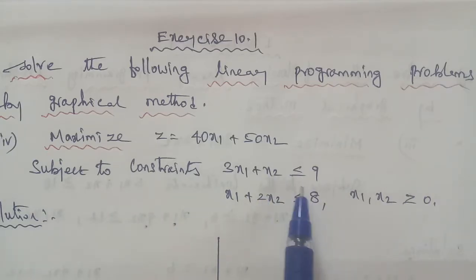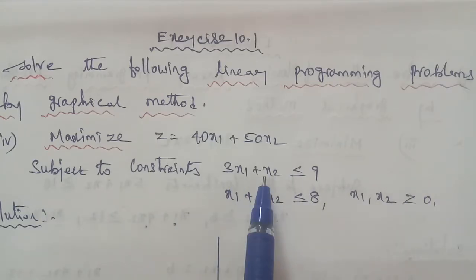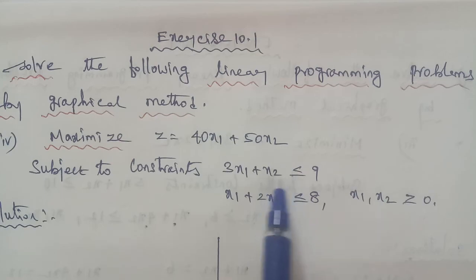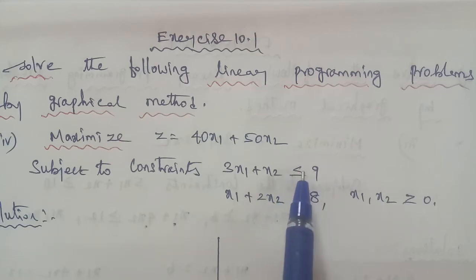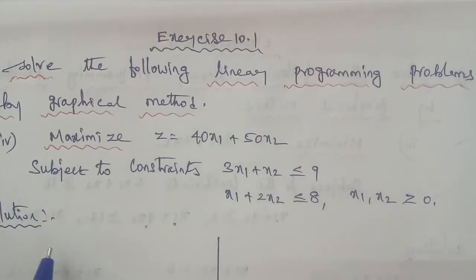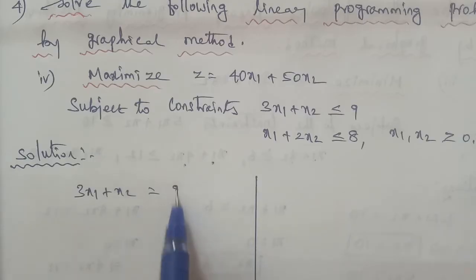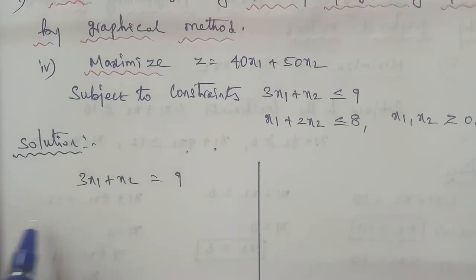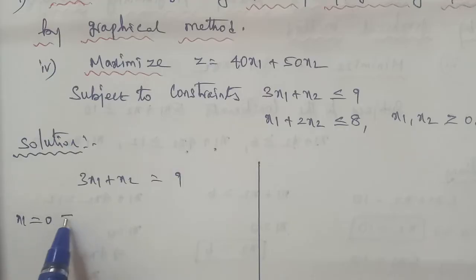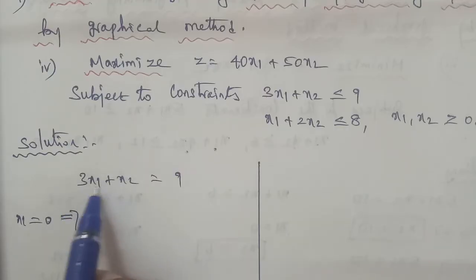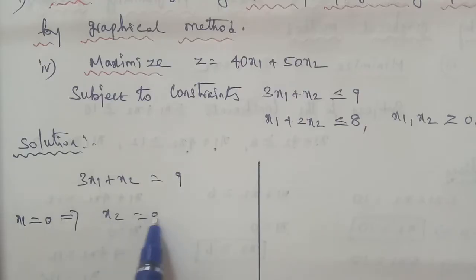Subject to constraints equation: first, 3x1 plus x2 less than or equal to 9. So treating it as equality: 3x1 plus x2 equals 9. When x1 is equal to 0, substituting: 3 into 0 is 0, so remaining x2 is equal to 9.